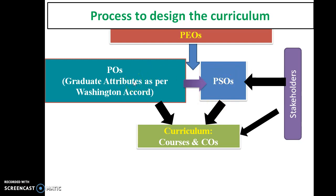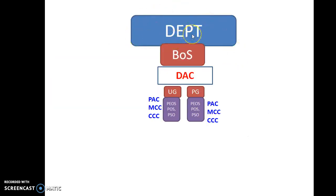At the department level, the highest external body is the Board of Studies, called BOS. Below that we have the DAC. If you have two different programs, you have a single DAC and two different PACs — MCC and CCC. If you have a single program, you have one DAC and one PAC, MCC, and CCC. We will discuss the functions of these committees later.